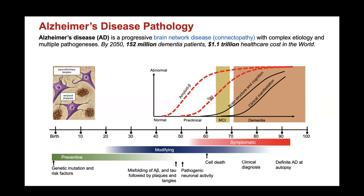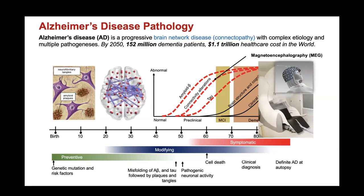There are three major biomarkers for Alzheimer's disease: two different proteins — amyloid-beta and tau — and also brain connectivity alterations. We can use the advanced neural imaging modality called magnetoencephalography, MEG. We can use this to measure brain activity directly from different patients.